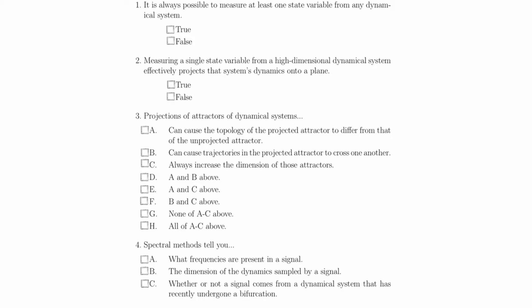Question 1 states that it is always possible to measure at least one state variable from any dynamical system. This is false. This is something that every time series analyst wishes was true, but it's most definitely false.